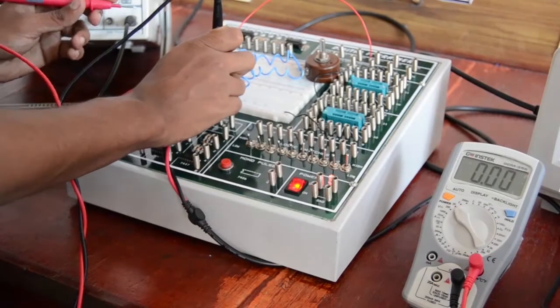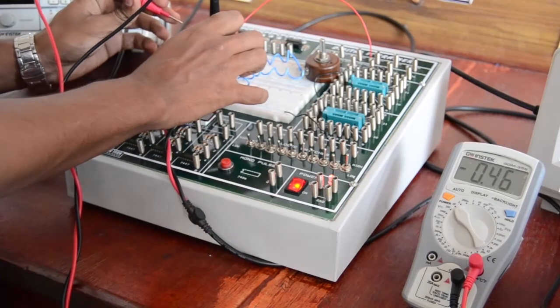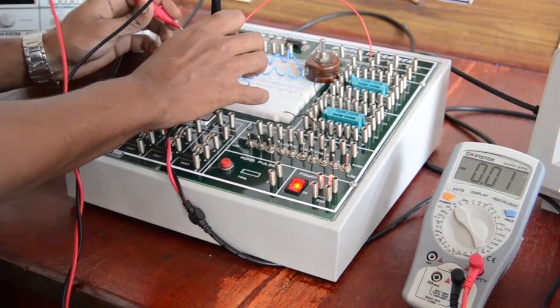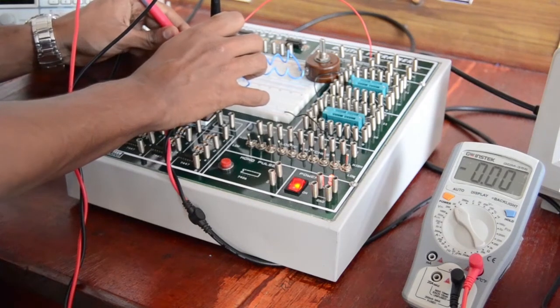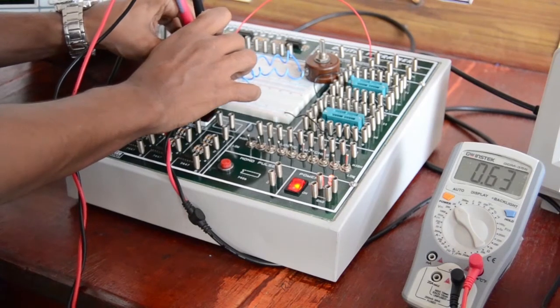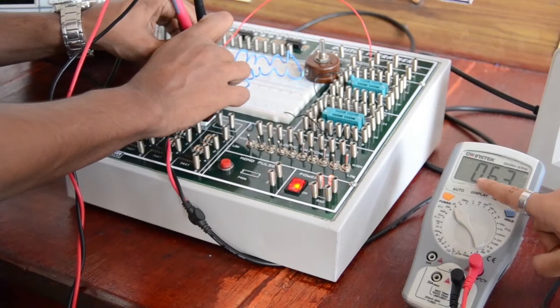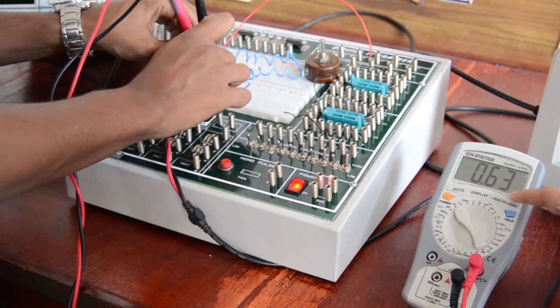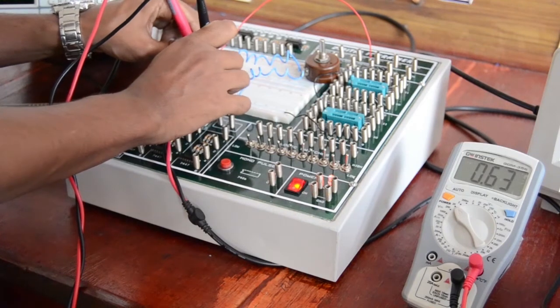Now, let's check the DC conditions. For a transistor to act as an amplifier, the base emitter voltage should be between 0.6 and 0.7. On verifying that, we are obtaining a voltage of 0.63, which implies that the transistor is operating in active region.